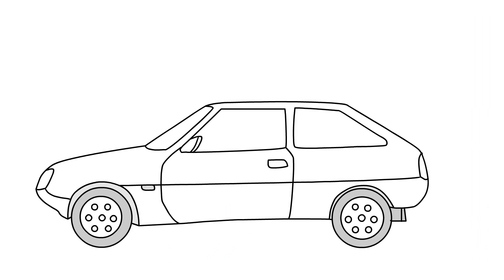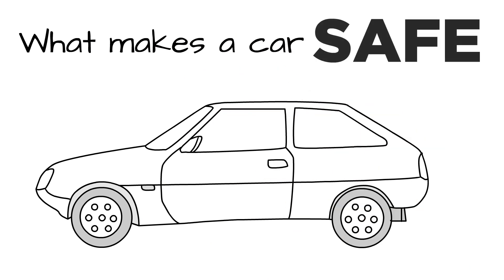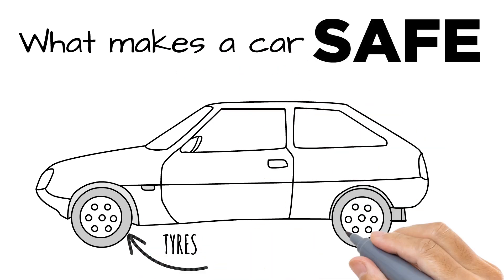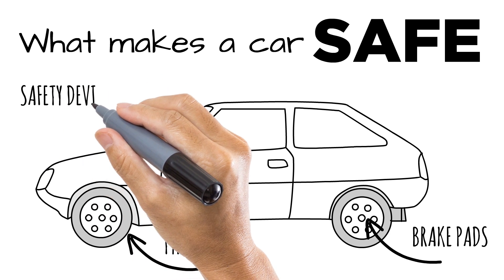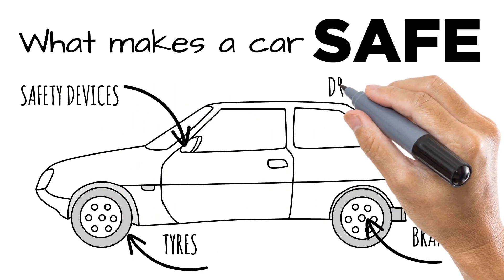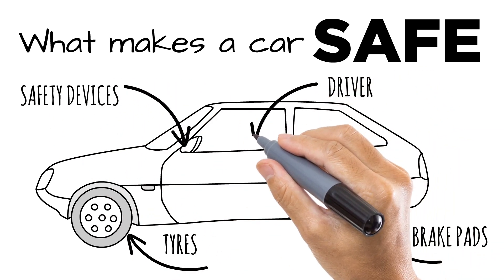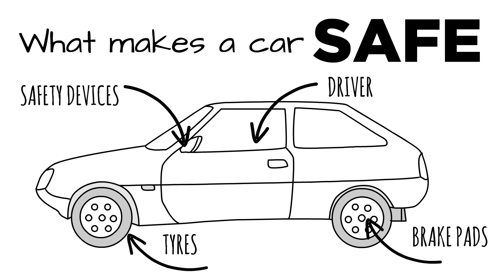Simply think of a car. What makes a car safe is how worn the tires are, how worn the brake pads are, how many safety devices—airbags, seatbelts, etc.—that the vehicle has, and how skilled or impaired the driver of the car is.